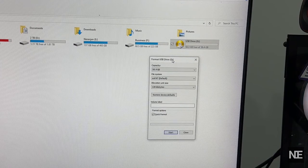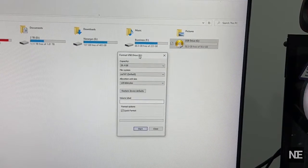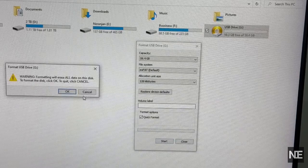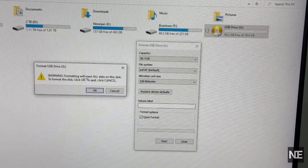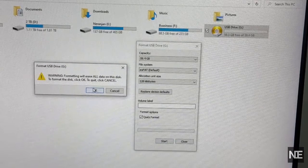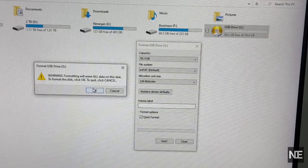In the format window, select the default format as the file system. Click on Start to begin formatting. A warning will pop up saying all data will be erased. If you've backed up your files, go ahead and click OK.